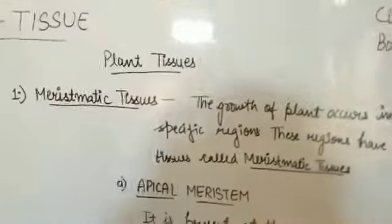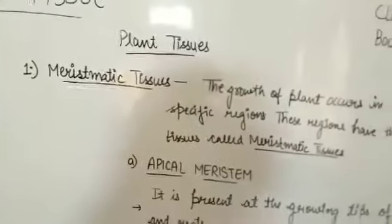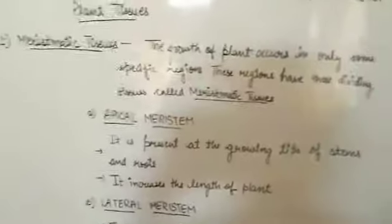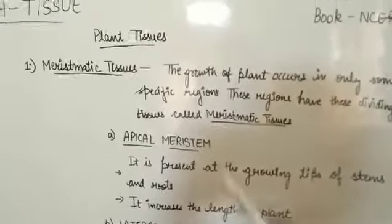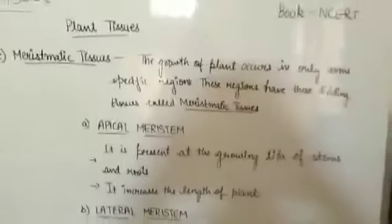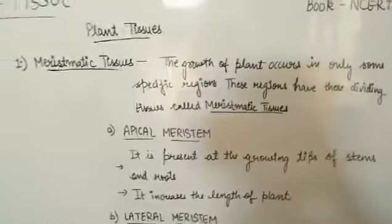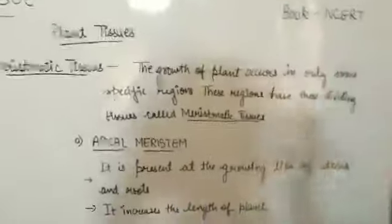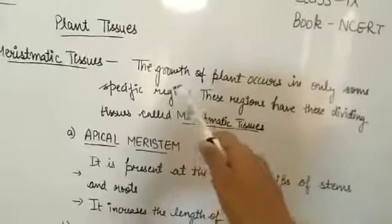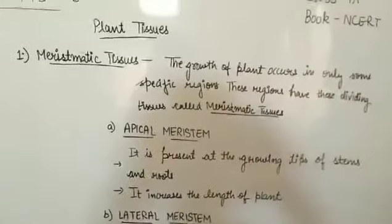We are starting with the first topic: plant tissue. In plant tissue, first we will talk about meristematic tissue. One of the most important facts about plants is that they do not grow from every area. Plants have some specific regions from where they grow. The growth of the plant occurs only in some specific regions, and these regions have dividing tissues called meristematic tissues.